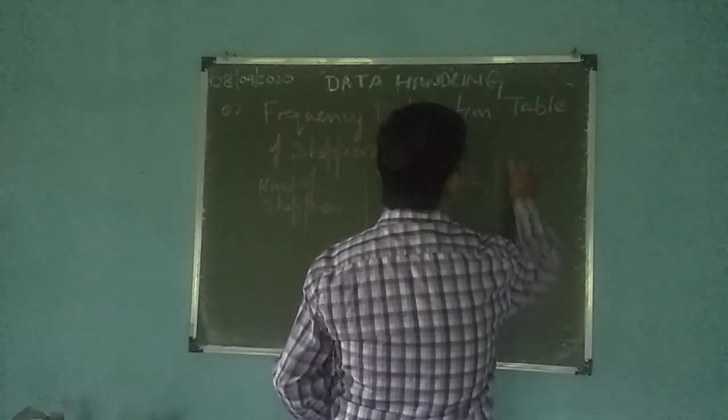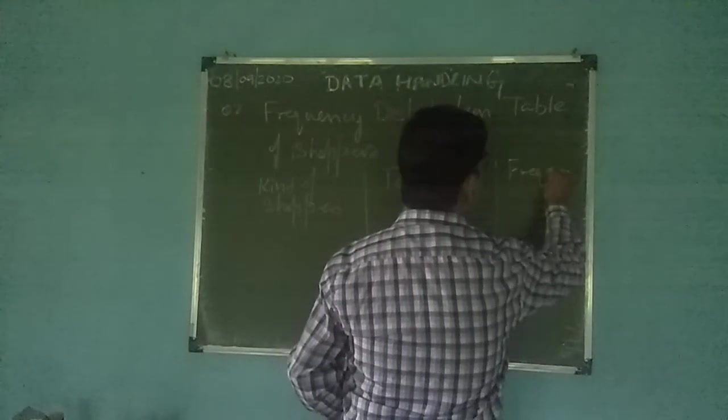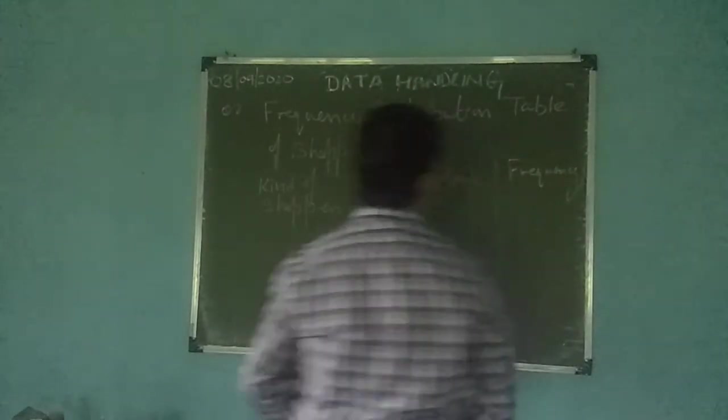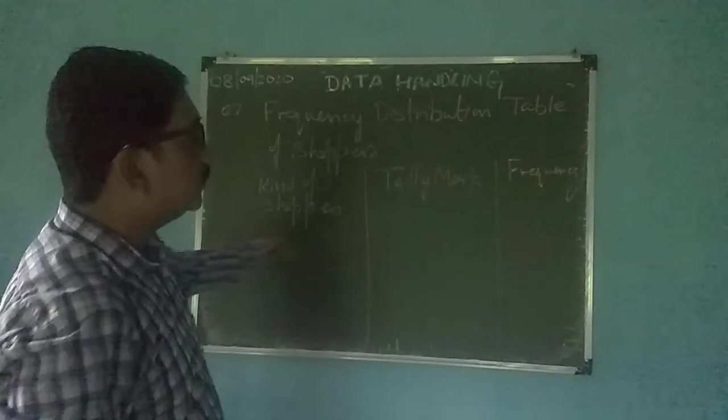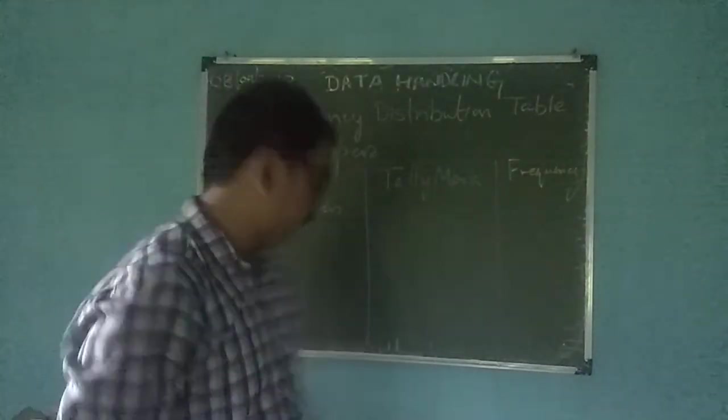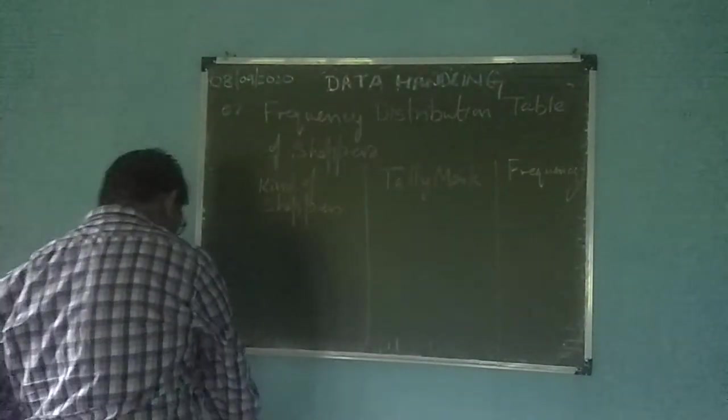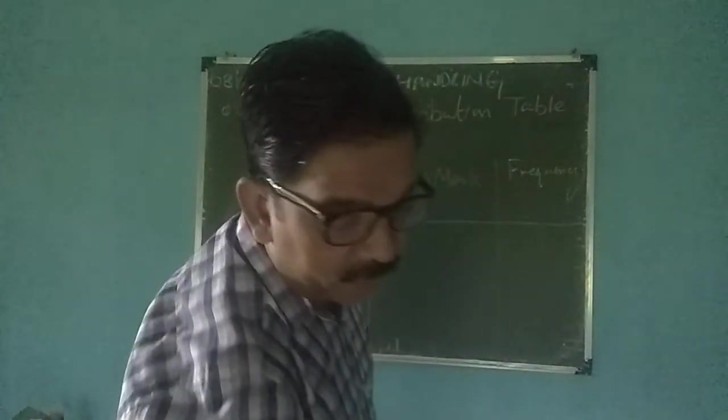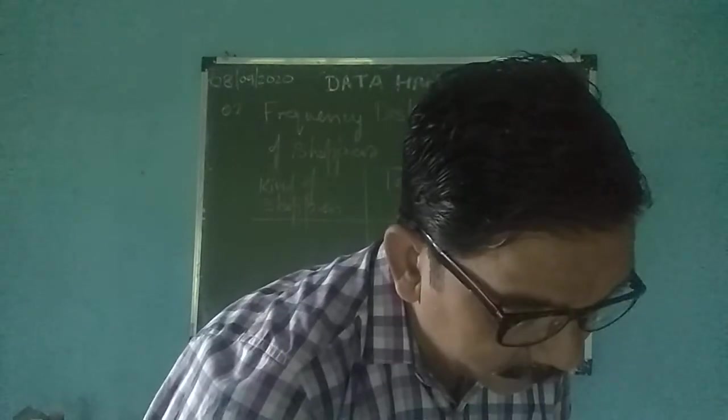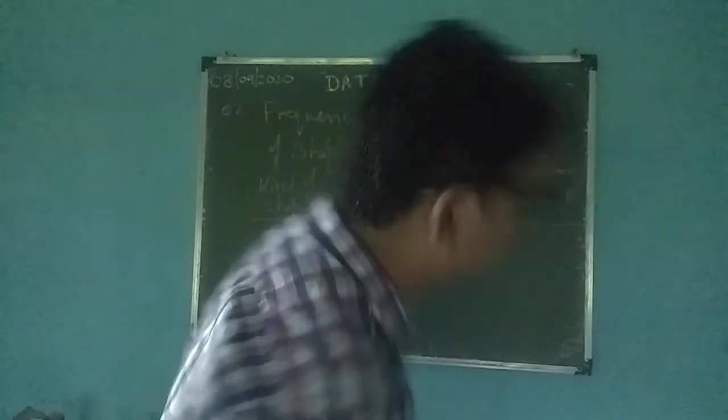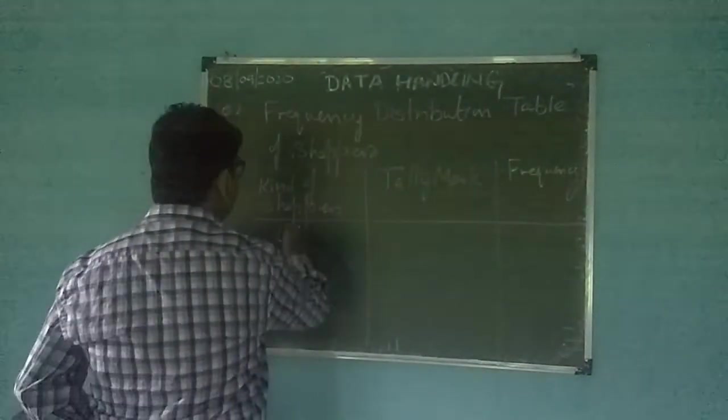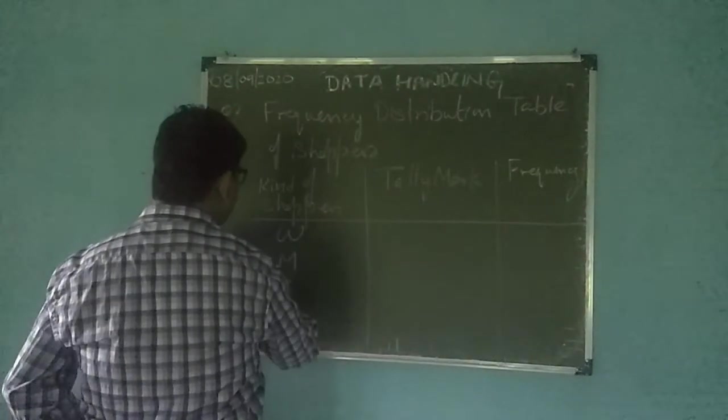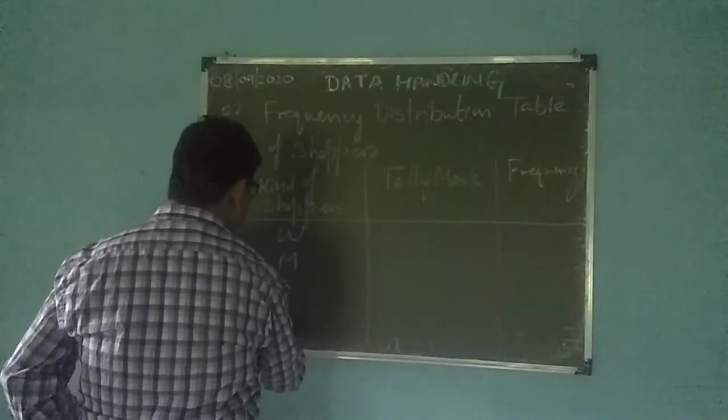Then comes frequency. Kind of shoppers, tally mark, then frequency. Now here shoppers are like W, M, B, G, W, M, B, G.